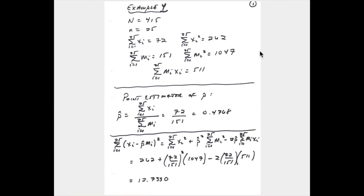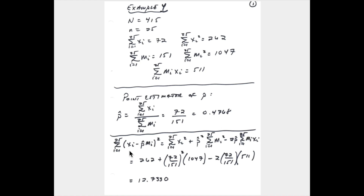Here we have the summary statistics and population information. Cap N, the total number of clusters, is 415. Our sample size is 25 clusters. We have the sum of the x's, the sum of the squared x's, the sum of the cap M sub i's, and the sum of the squared cap M sub i's. There are 72 people in the overall sample that rent, so the point estimator p-hat is 72—the sum of the x sub i's—over the sum of the cap M sub i's, which is 151, the total number of members in the sample. So p-hat equals 0.4768.